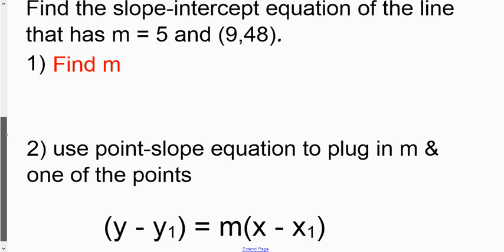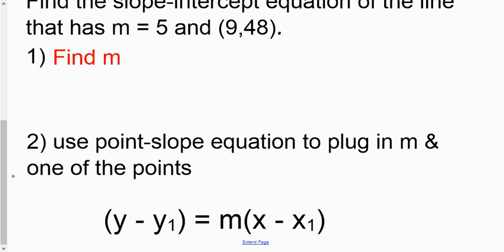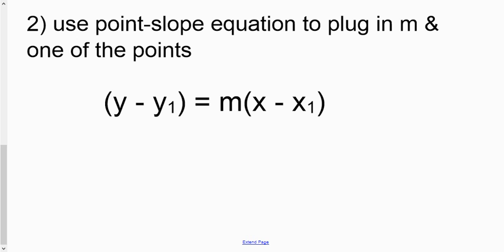Then we use the point-slope equation to plug in m and one of the points. So let's get a little bit more space here to work with. I'm going to write (9,48) here, and I'm going to write m equals 5 right there so we can remember what it was. This plugs in right here. This 9 plugs in right here. And this 48, since it's a y value, plugs in right there in the y1 slot.